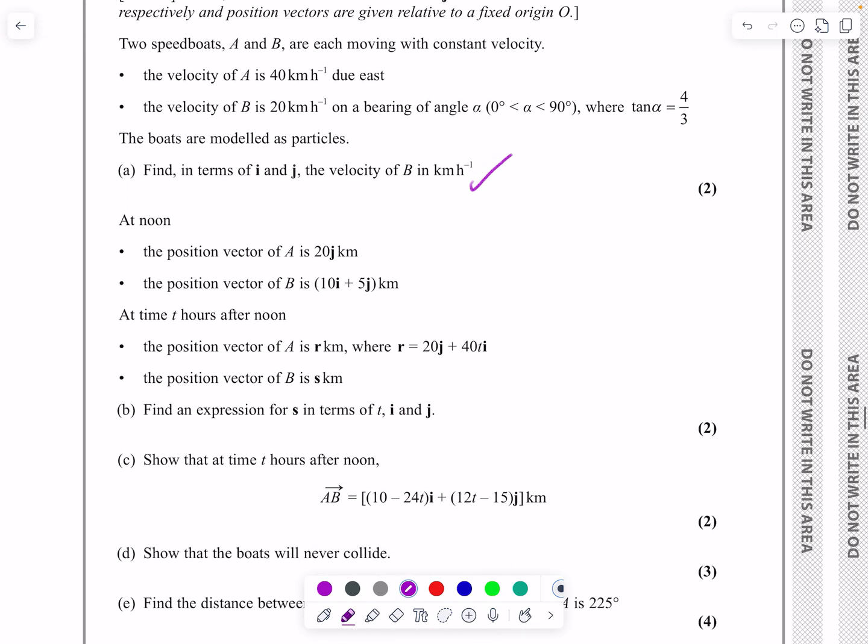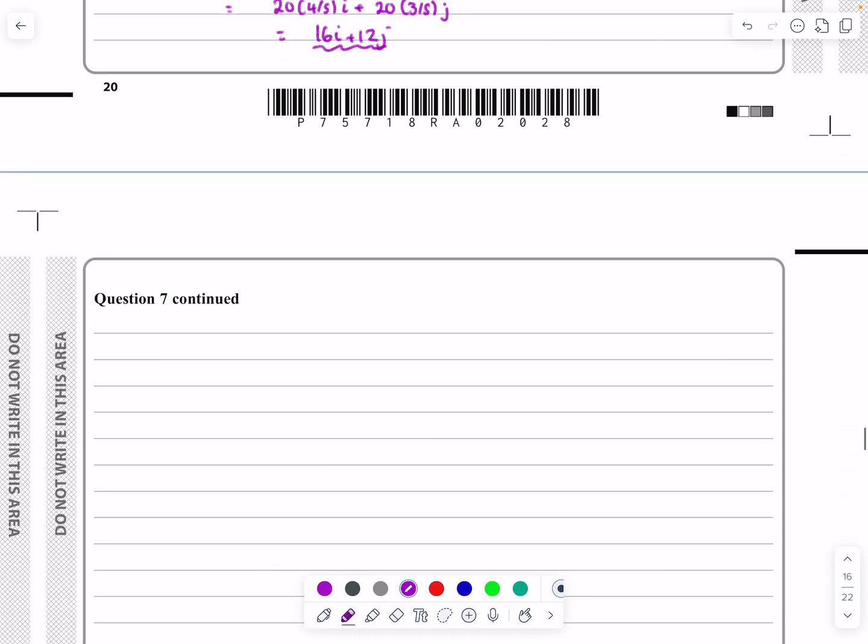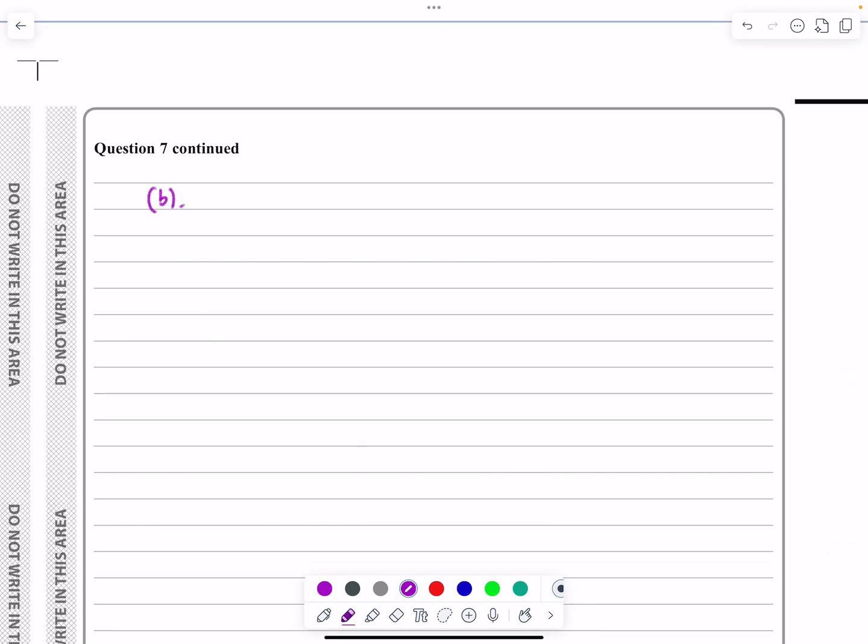Part B gives us new information. It tells me that A starts off at 20J, B starts off at 10I plus 5J, and the position vector of A is R equals 20I plus 40TJ. It asks for the position vector S of B. Let's show you how they worked out A and then do B. We're using the vector equation of a line.